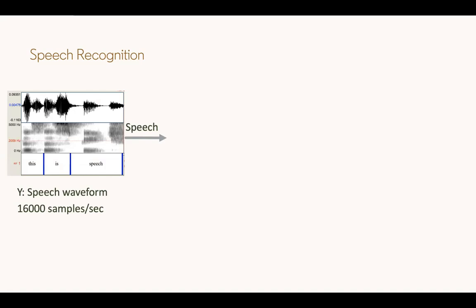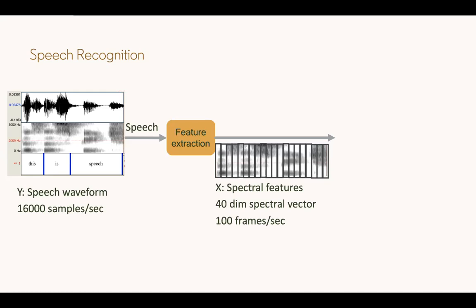Let's start with how speech recognition systems work at a high level. Here is a recording of me saying the sentence 'this is speech.' You have the acoustic waveform on the top, which is typically sampled at about 16,000 samples a second. In the middle section, we have what is called a spectrogram — a spectral representation of speech computed every 10 milliseconds, that is 100 times a second. That constitutes the spectrogram. You can think of the spectrogram as the features for speech. Every 100 times a second, we compute a speech vector of dimensionality typically 40 — a 40-dimensional spectral vector. We call these spectral vectors frames, or speech frames.